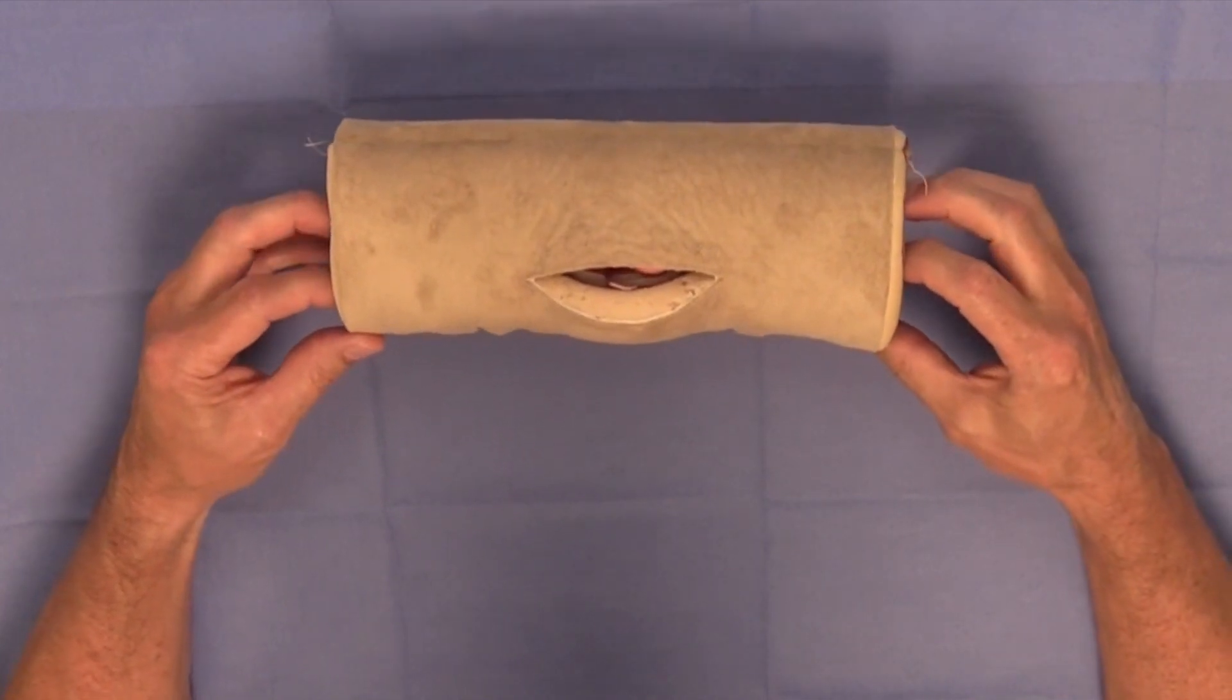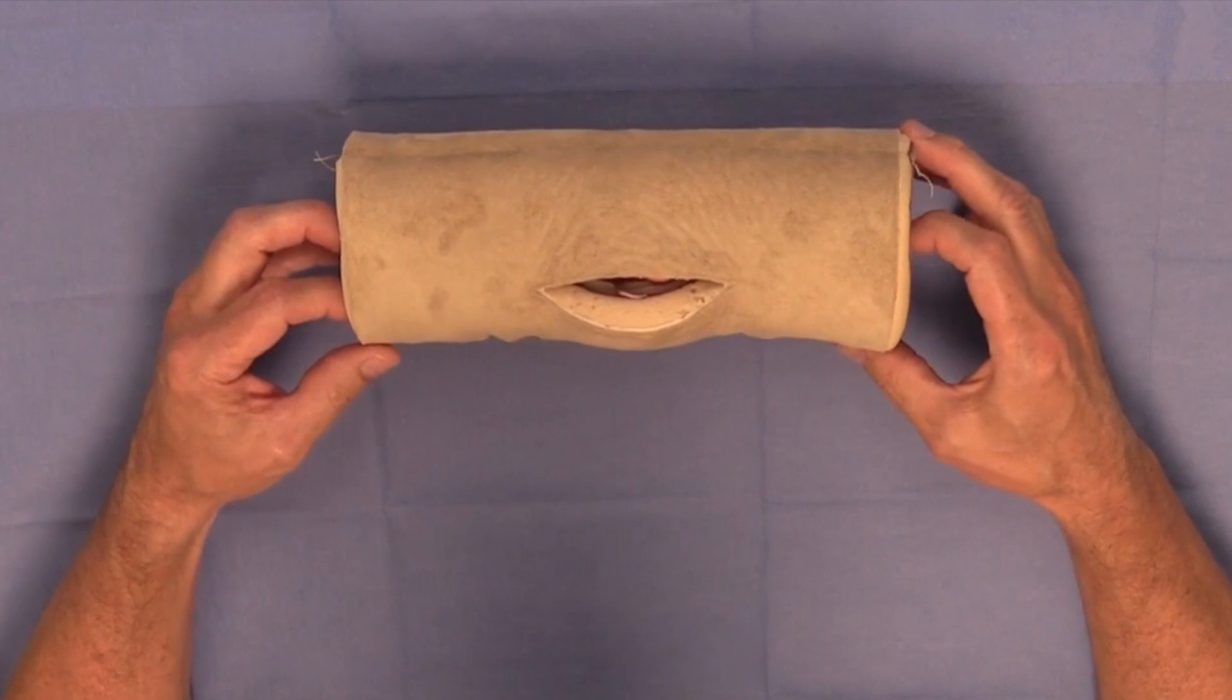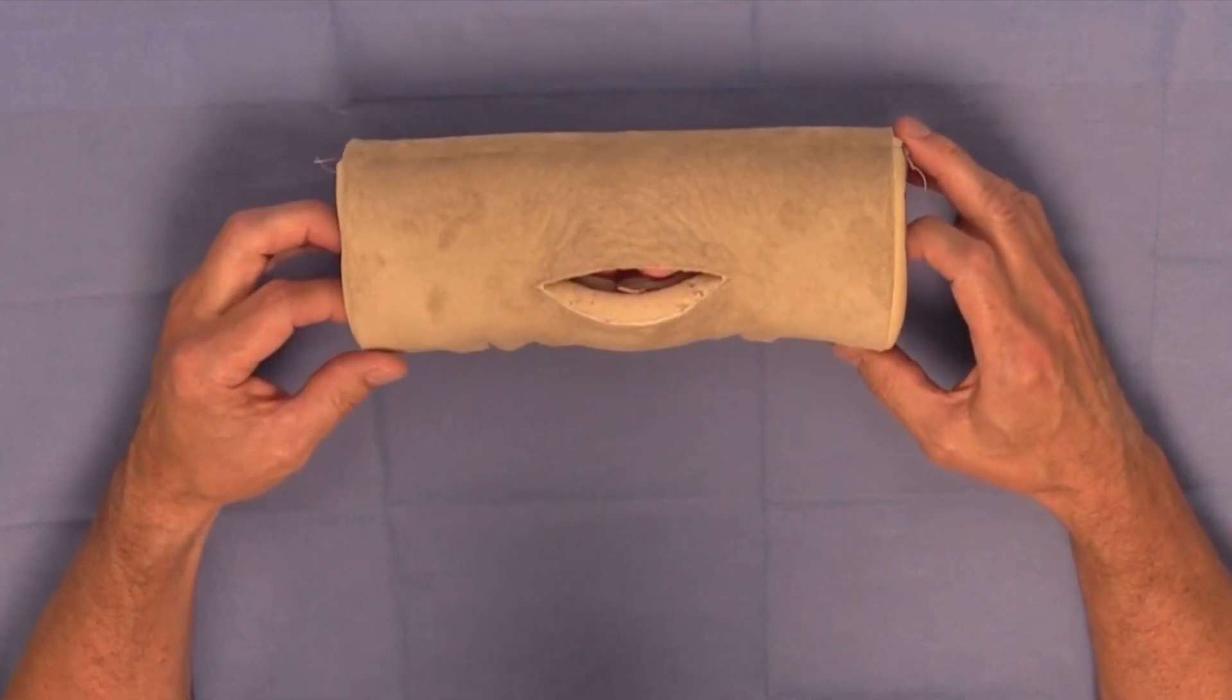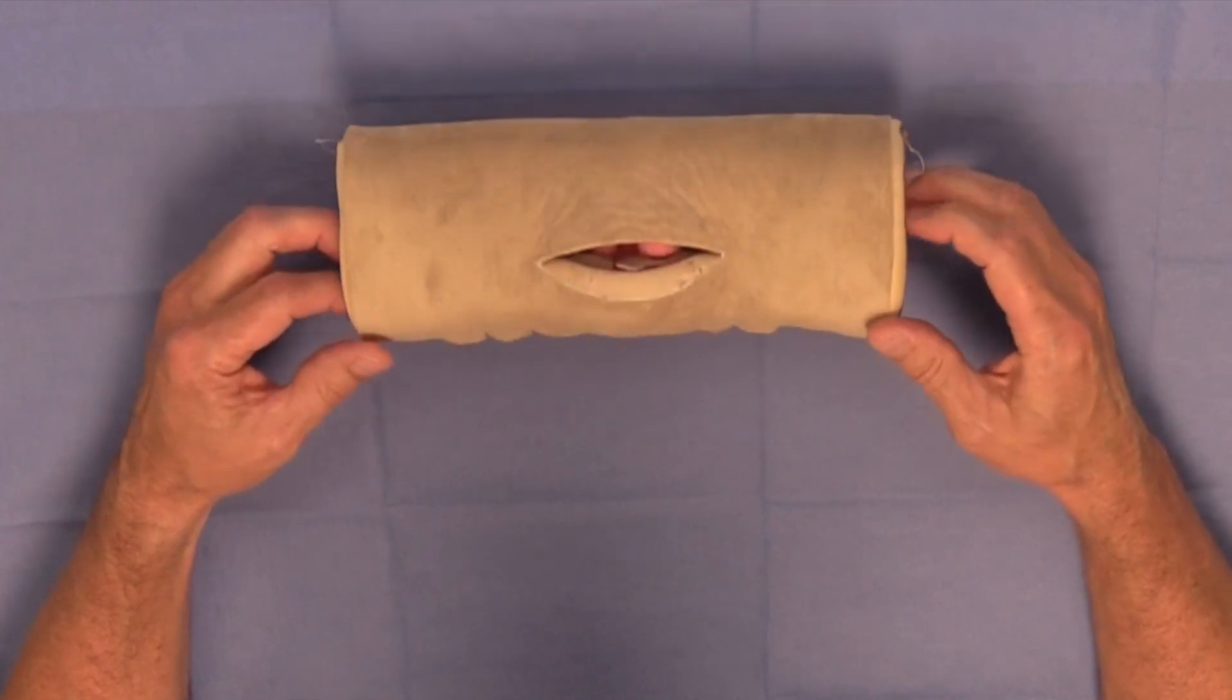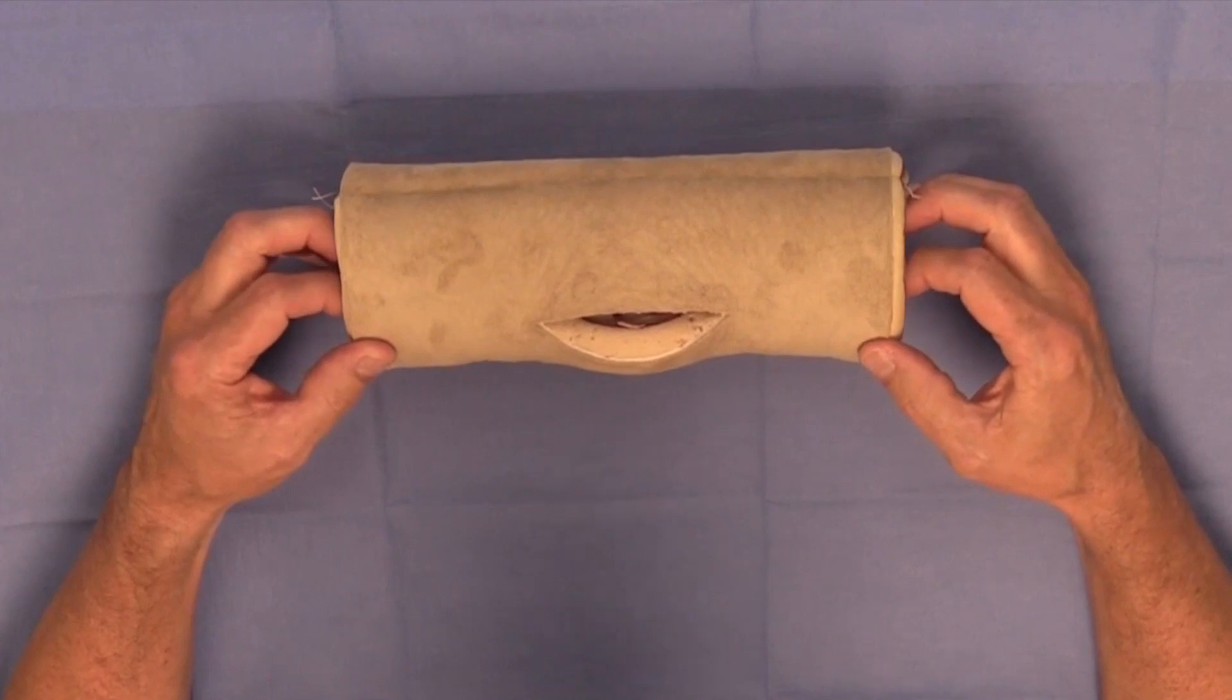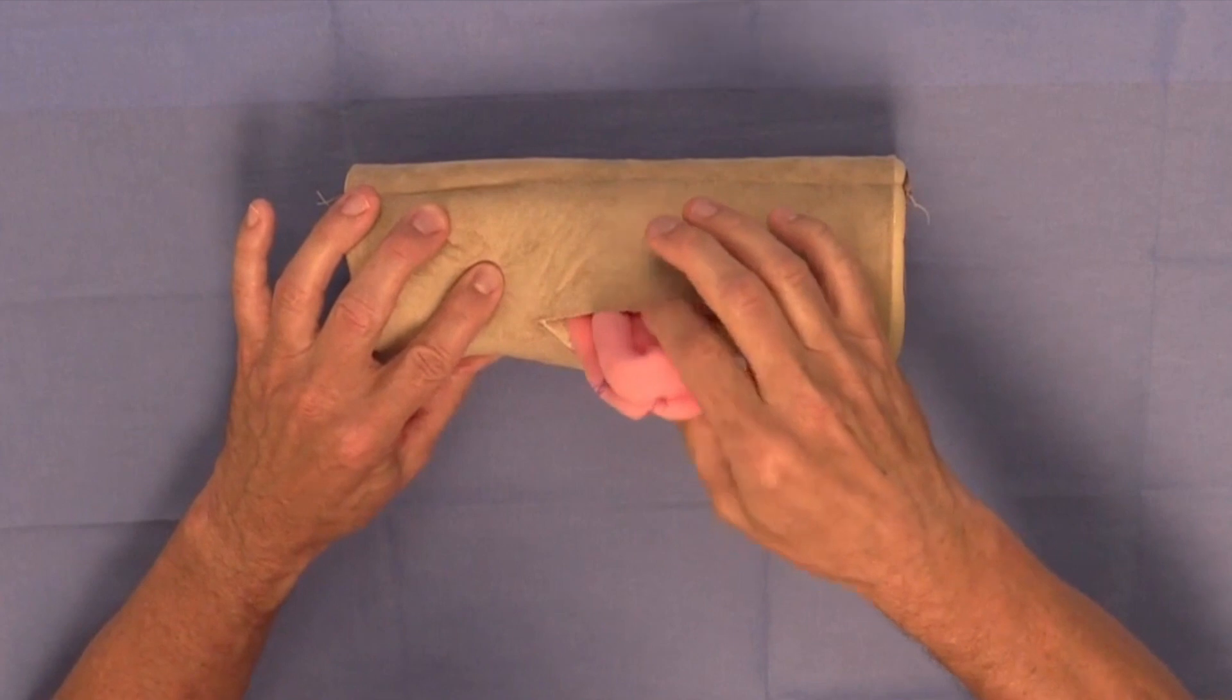Now the DAISY is an acronym for the dog abdominal surrogate for instructional exercises, and basically it was designed to mimic or be a facsimile of a ventral abdomen of a dog in which you could do the incision and take out a piece of bowel.